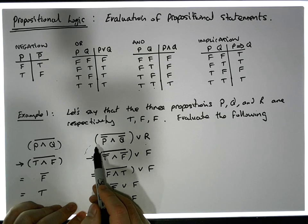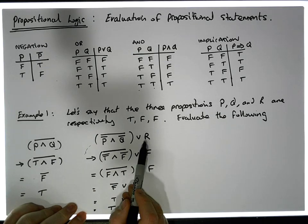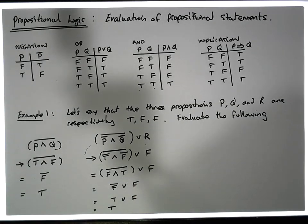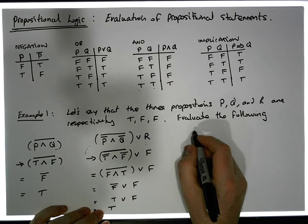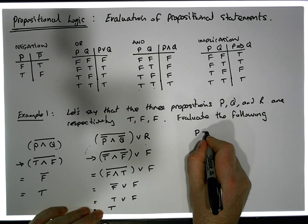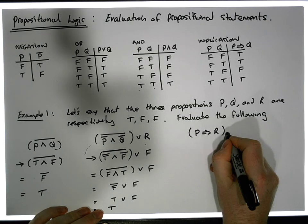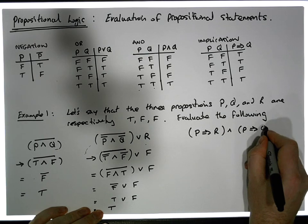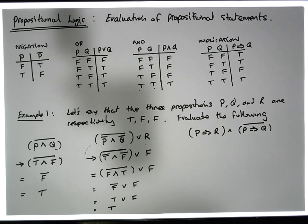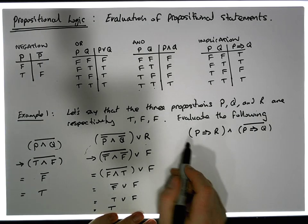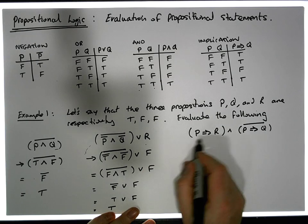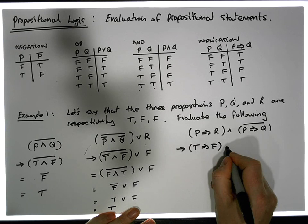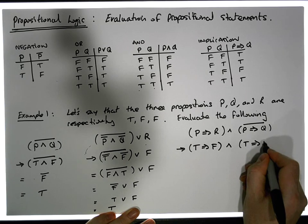So this more complicated compound proposition evaluates to true when P is true, Q is false, and OR is false. Let's have a look at something even more complicated: P implies OR, ANDed with P implies Q, and the whole thing negated. Once again, let's make our substitutions — P's are trues, Q's are falses, and OR's are false — so this becomes: true implies false, ANDed with true implies false, which needs to be negated.